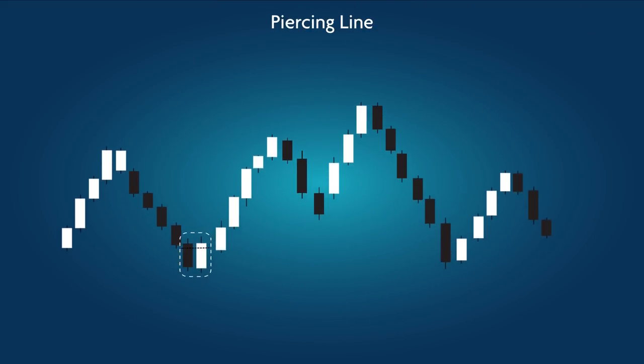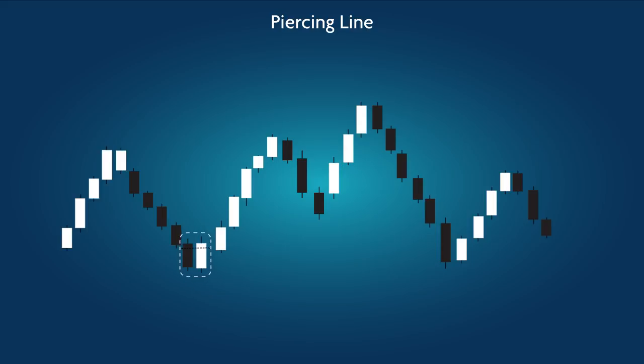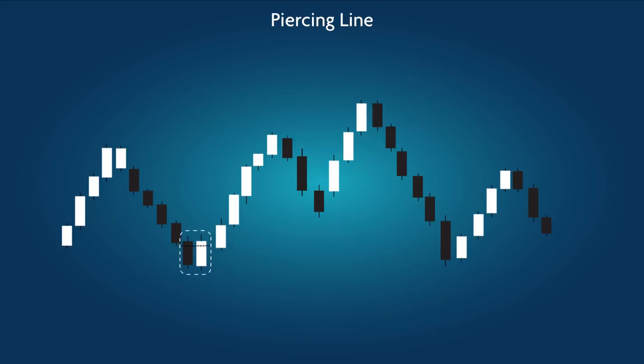Piercing Line: a bullish pattern. After a black wide-range candle, a clear candle follows and penetrates beyond the halfway point of the black candle's body.